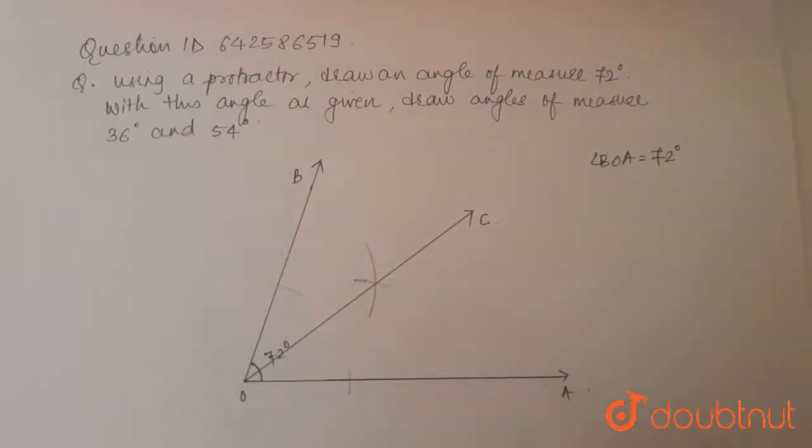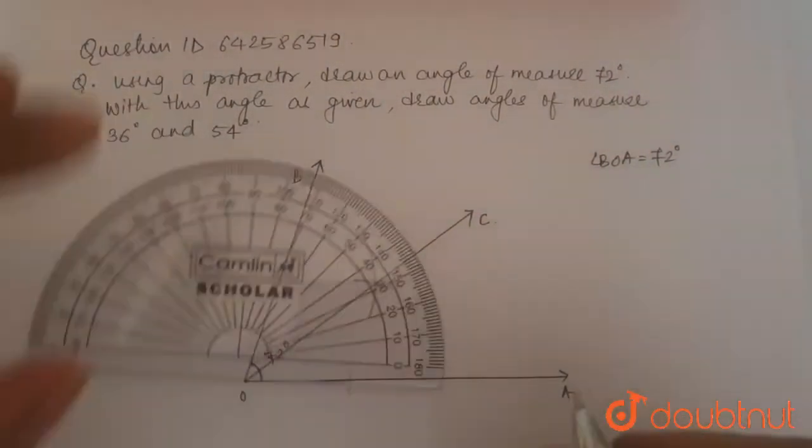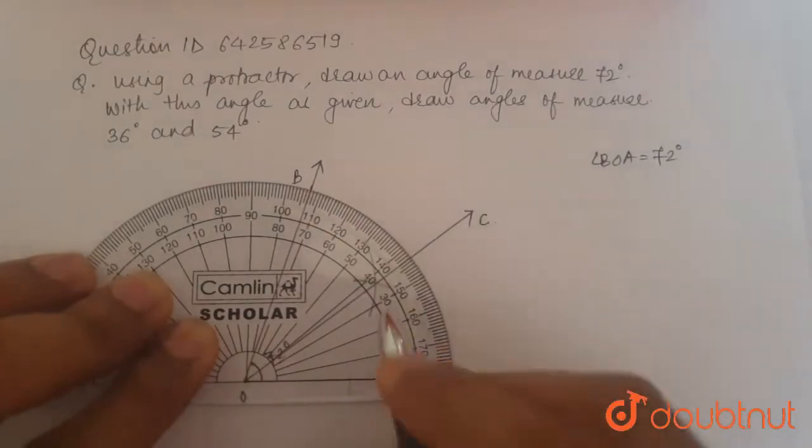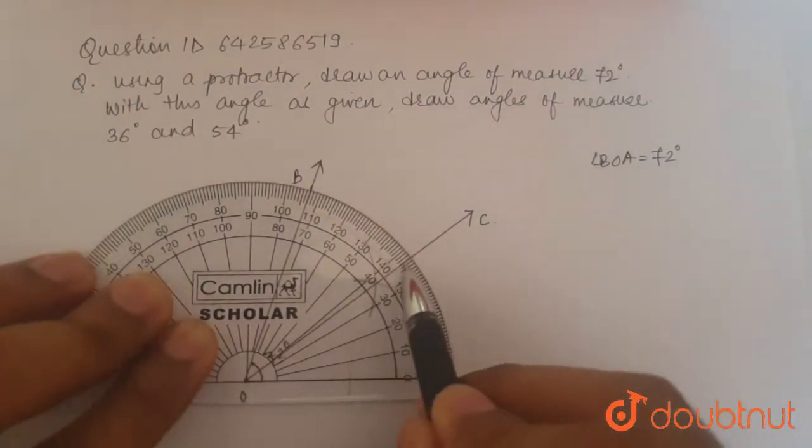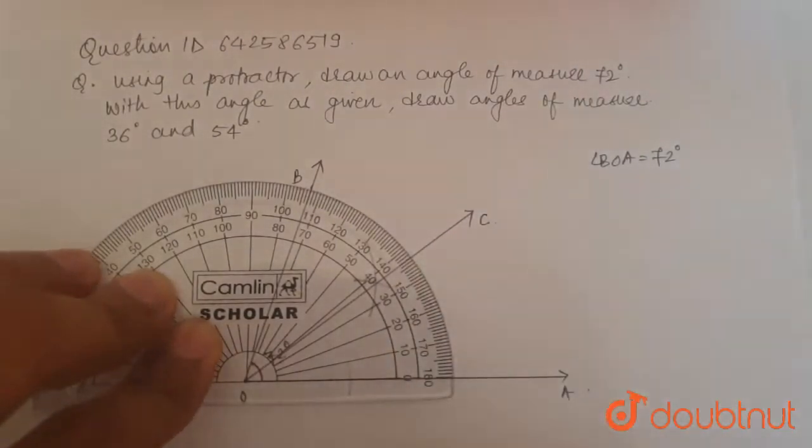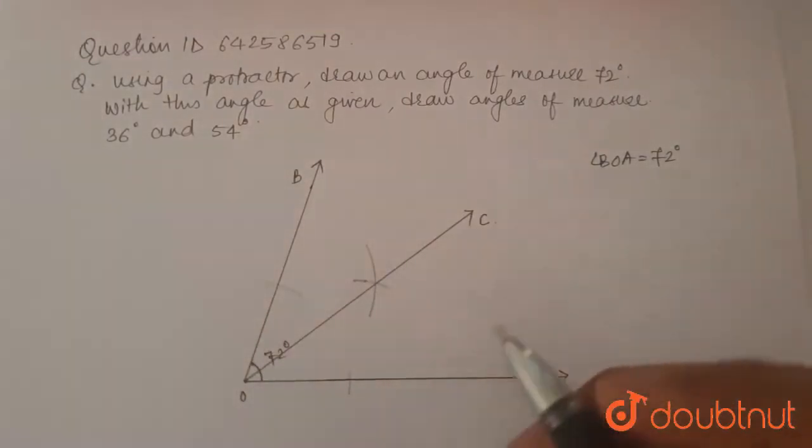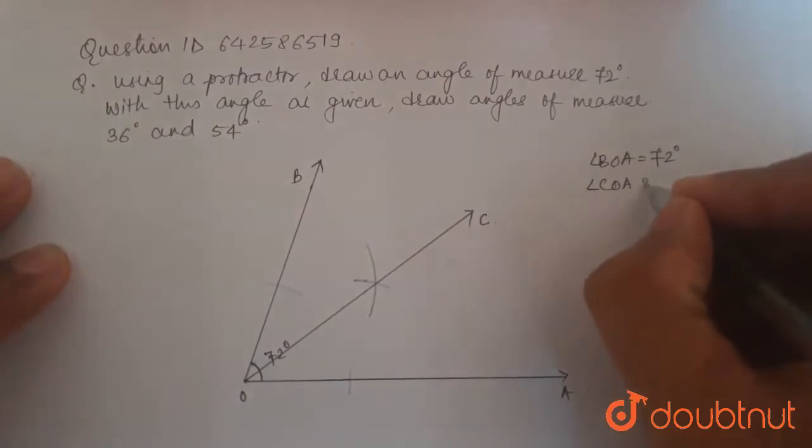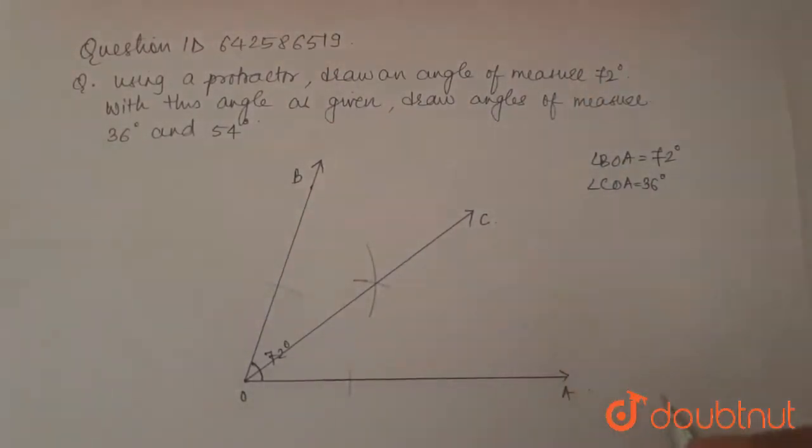Now, if we measure, we will get angle COA as approximately 36 degrees. So we write here angle COA equal to 36 degrees. The first part of the question is done.